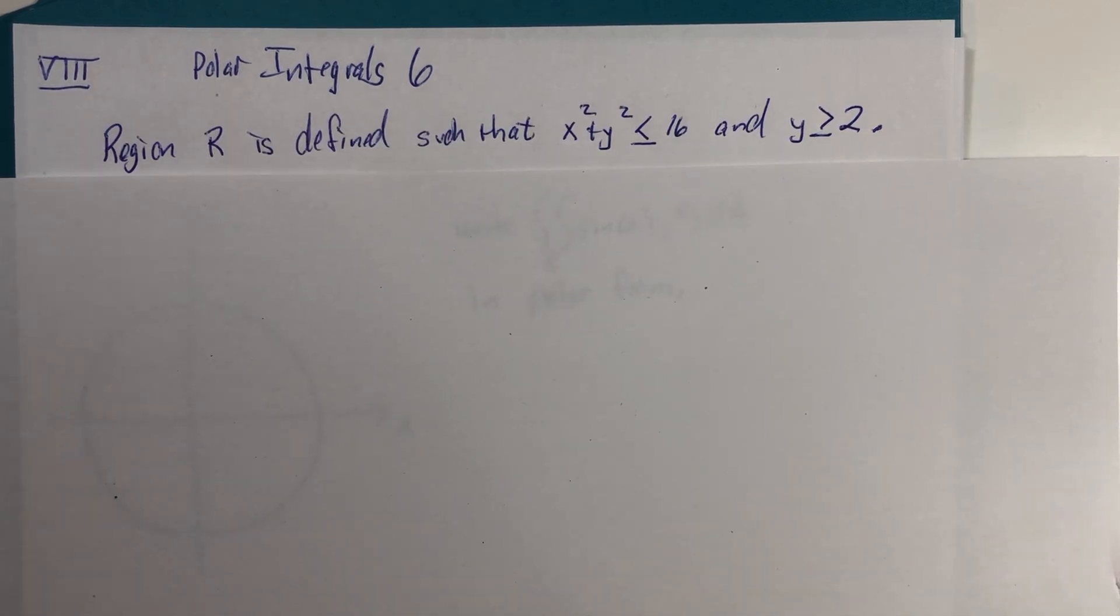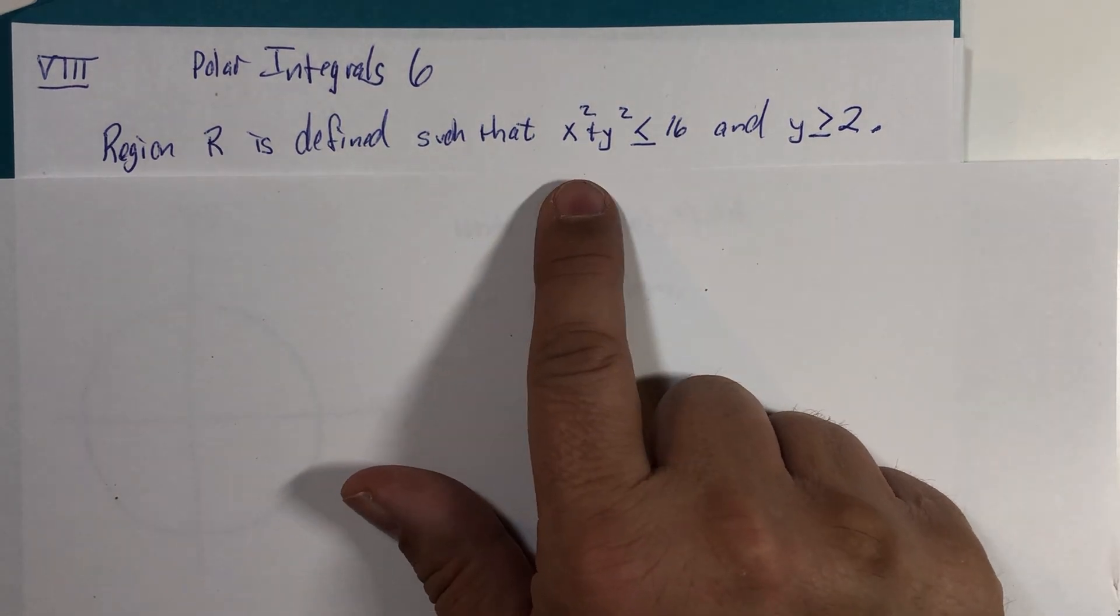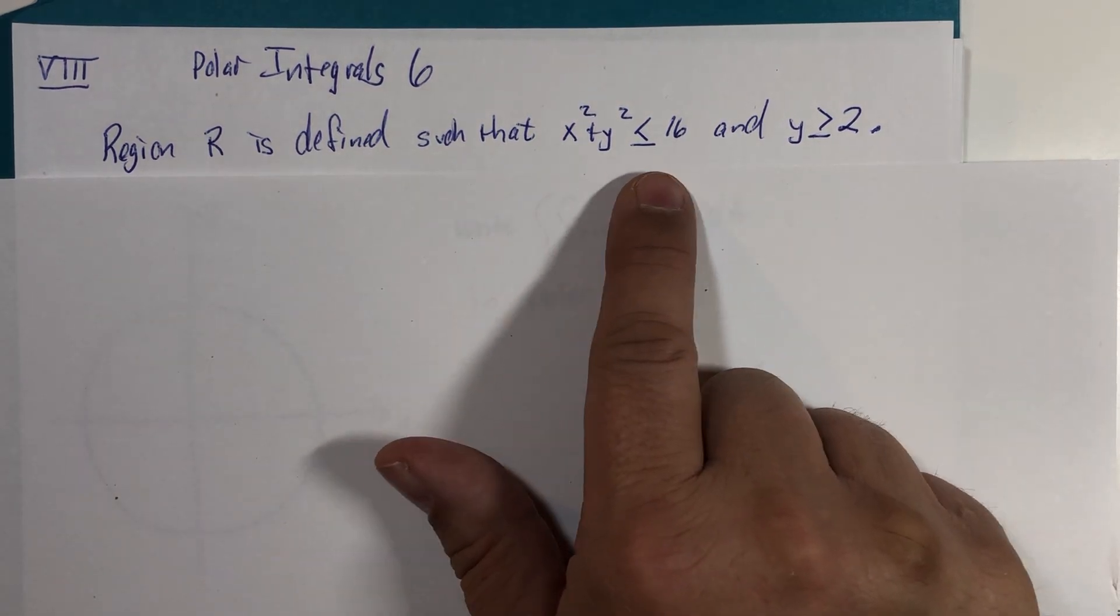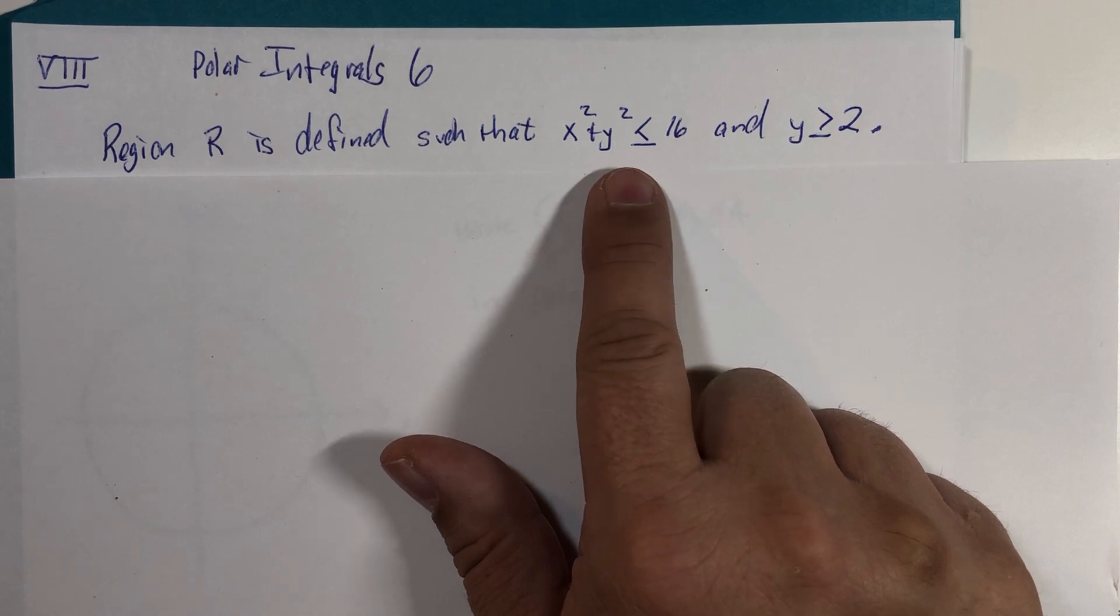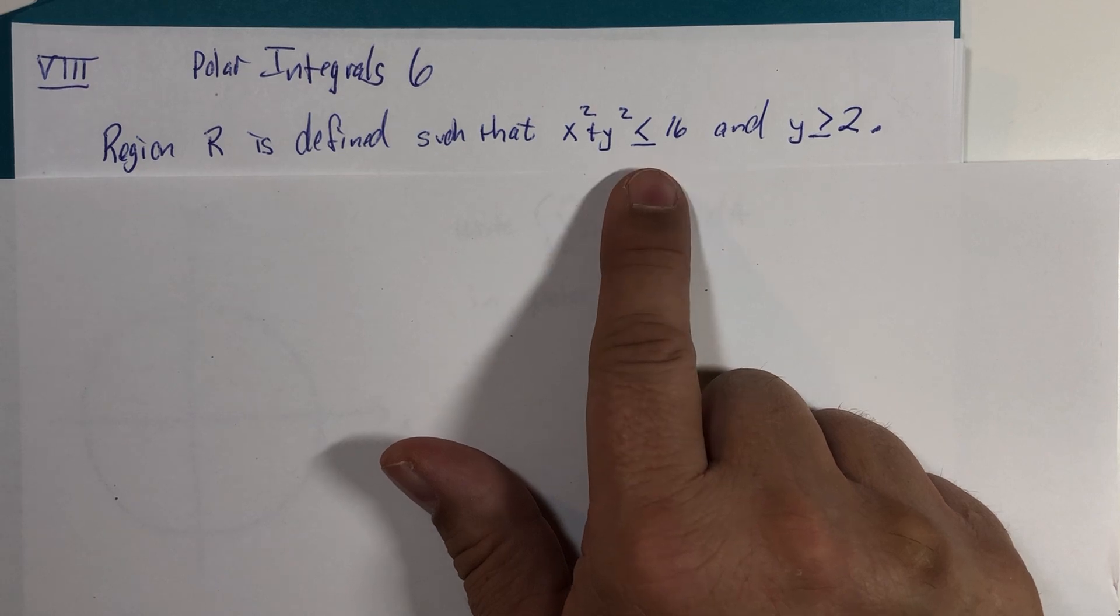such that x squared plus y squared is less than or equal to 16. So we know if this equals 16, we are looking at a circle. Less than or equal to 16 would be inside of the circle, and the radius is